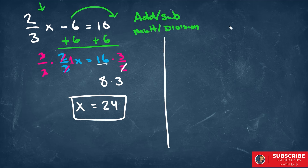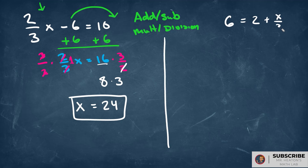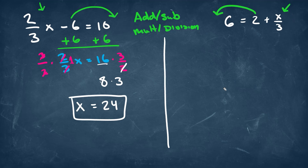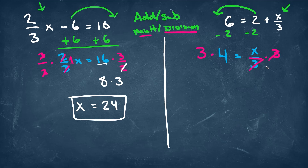For the next problem, we have 6 is equal to 2 plus x over 3. You'll notice that x is on the right side, so we're going to move all of our other numbers to the other side. We'll subtract 2 on the right side, which means we have to subtract 2 on the left. We're going to be left with 4 on the left is equal to x over 3. Since we have division here with our x variable, we're going to do the opposite — multiplication — so we'll multiply by 3 on both sides. The 3 over 3 will cancel out and we'll be left with x equal to 12. It should be noted that 12 is equal to x is the same as x is equal to 12 — it's just written in reverse, but gives you the same answer.